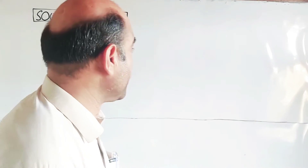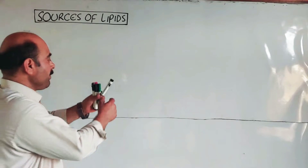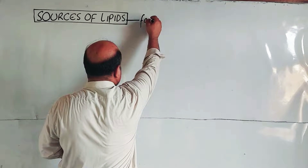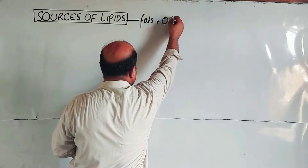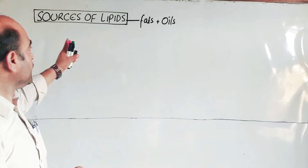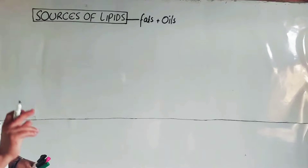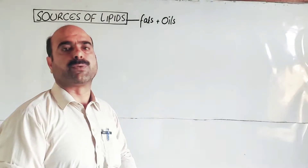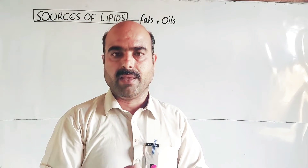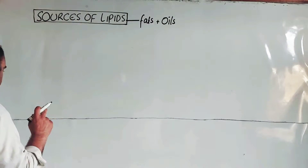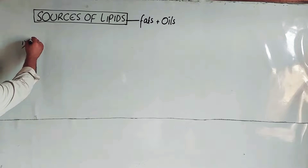Students, today's topic in biochemistry is the various important sources of lipids. Basically, lipids are categorized into fats and oils. Fats and oils are the main sources of lipids. There are three main sources of lipids — three main sources from which lipids can be extracted, obtained. The first one is animal sources.